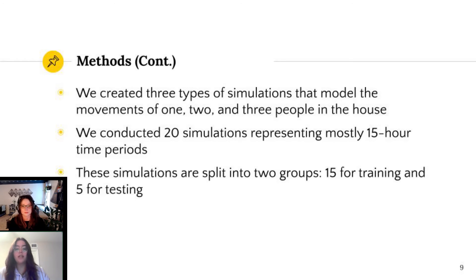To run our experiments in our testbed, we developed three kinds of simulations that model the movements of one, two, and three people inside the home. Each of our five chosen cities has its own version of these simulations, giving us a total of 20 simulations. These model a 15-hour day in roughly an hour and a half, so we are able to collect data 10 times faster than in real time. We set aside 15 simulations for training and five for testing, giving us a 75-25 split in our data.